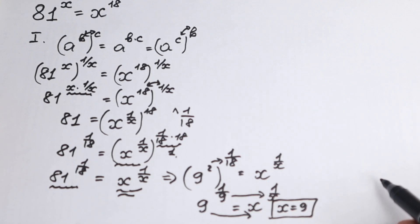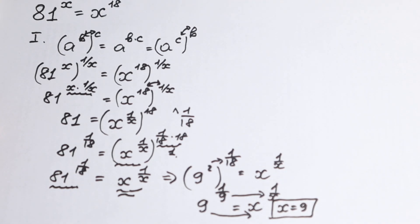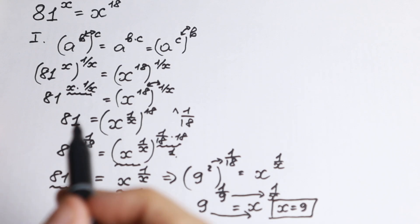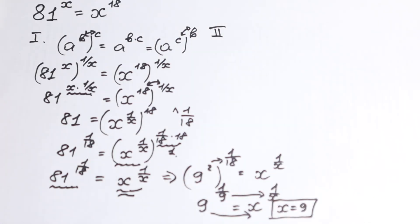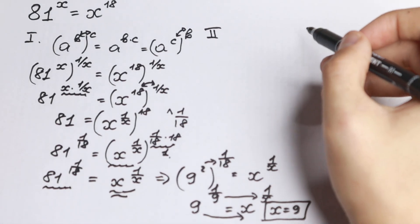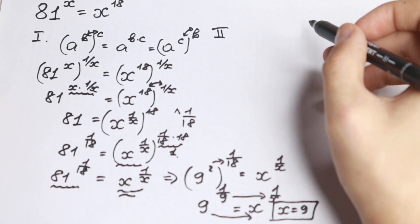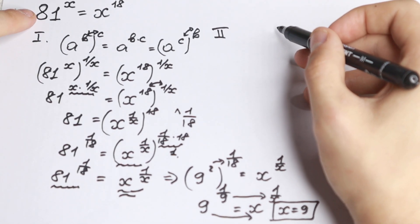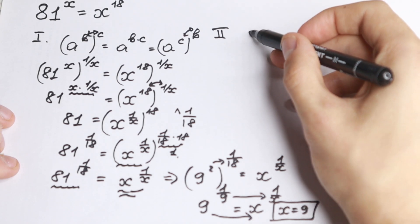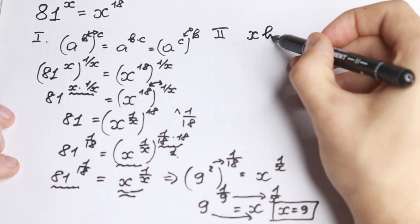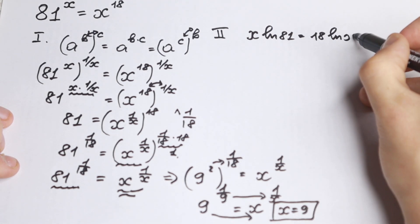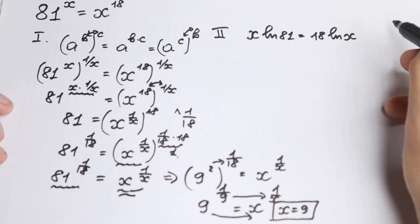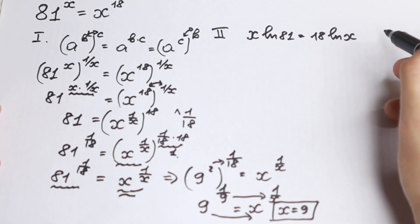Now I want to show the second method — using logarithms. Let's solve it using natural log. If we take natural log on both sides, we get x times ln 81 equal to 18 times ln x. Nothing hard — just take log on both sides.